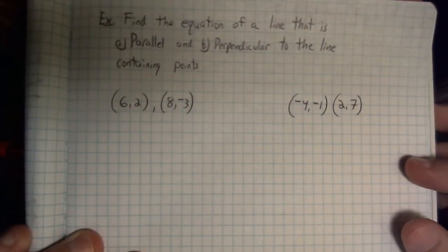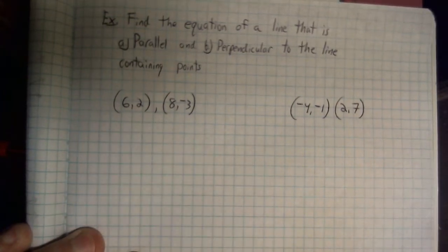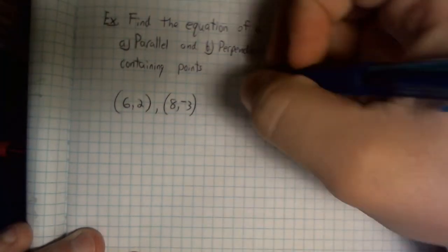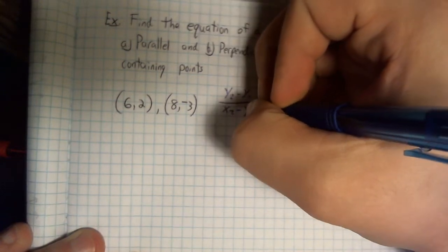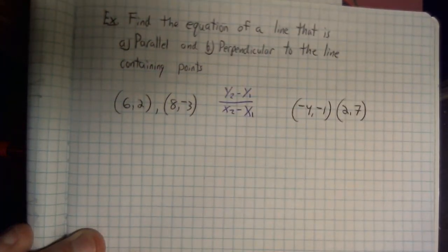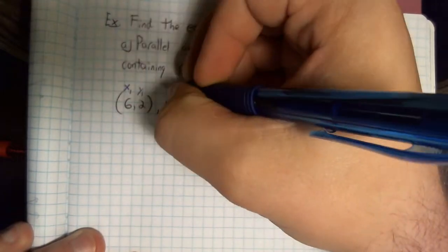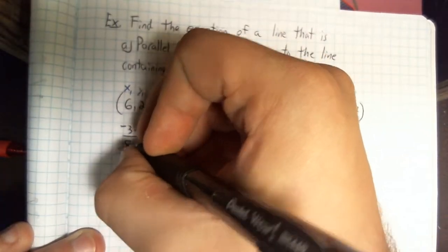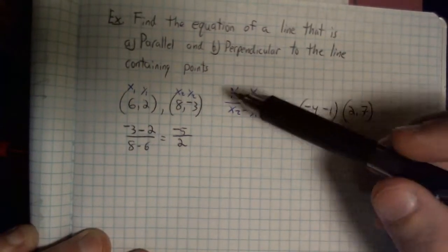What if they give us problems that aren't as straightforward with the slopes — what if they give us some coordinates? That's not really anything to worry about. If we remember our slope formula — y2 minus y1 over x2 minus x1 — all we have to do is plug in the coordinates to the formula to find the slope. I'm going to label x1, y1, x2, y2. If I plug these in properly, I'm going to have negative 3 minus 2 over 8 minus 6, which gives me negative 5 over 2. That's the slope of my given line.